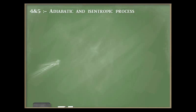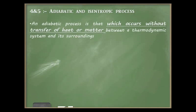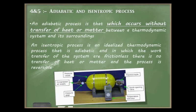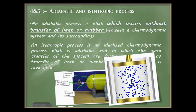Next is adiabatic and isentropic process. An adiabatic process occurs without transfer of heat or matter between the thermodynamic system and its surroundings. An isentropic process is an idealized adiabatic process where work transfer is frictionless, there is no heat or matter transfer, and the process is reversible. Since entropy is generated by irreversibility and heat transfer, in a reversible adiabatic process entropy remains constant — hence it is called an isentropic or constant entropy process.